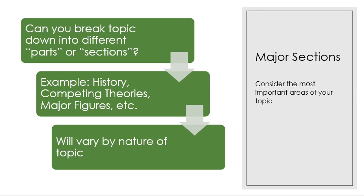Now that we've talked about the introduction using 'Elusive Theory of Everything' as an example, the next step is breaking down your paper into different sections — different parts based on your topic and what question you're asking. What are the areas you need to address? For example, you might want to talk about history, competing theories, or major figures. It's a little hard to be specific here because it's going to vary depending on the nature of your topic.